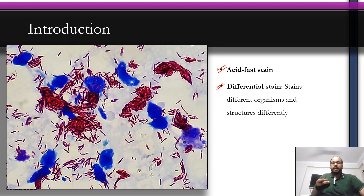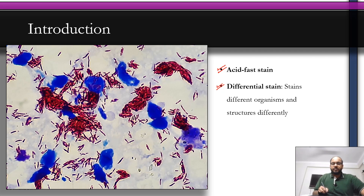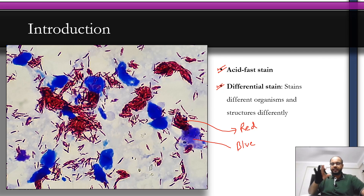Being a differential stain, ZN staining stains the mycolic acid-containing mycobacteria red, while the background is blue, increasing contrast so we can better identify the bacilli. As you can see in the picture, the mycobacteria are stained red while the background and other epithelial cells are stained blue. Two different stains of different colors are used for different structures. Another example of a differential stain is the gram stain.